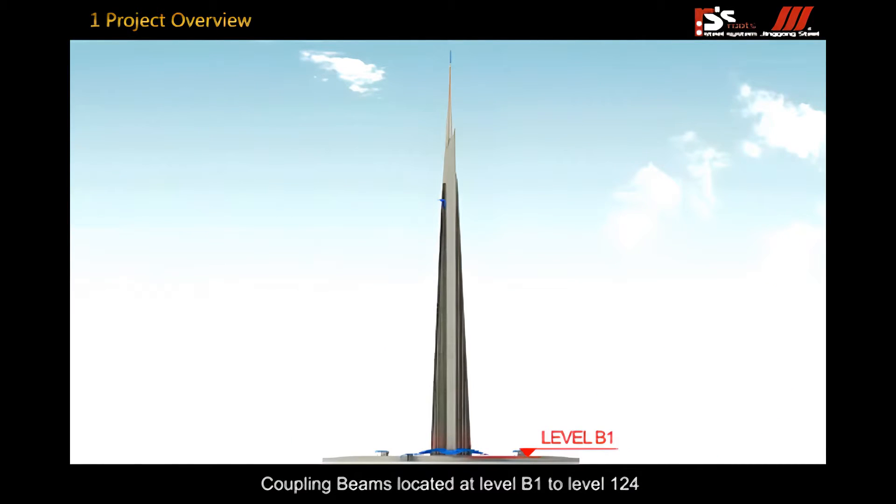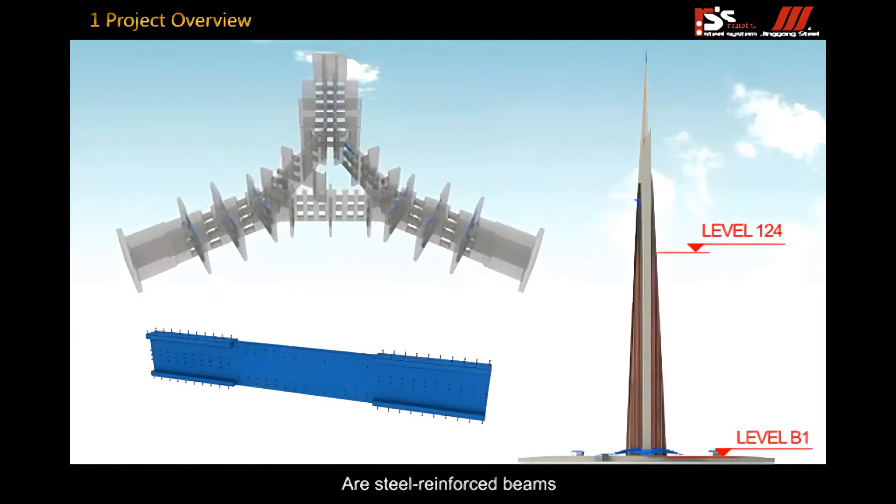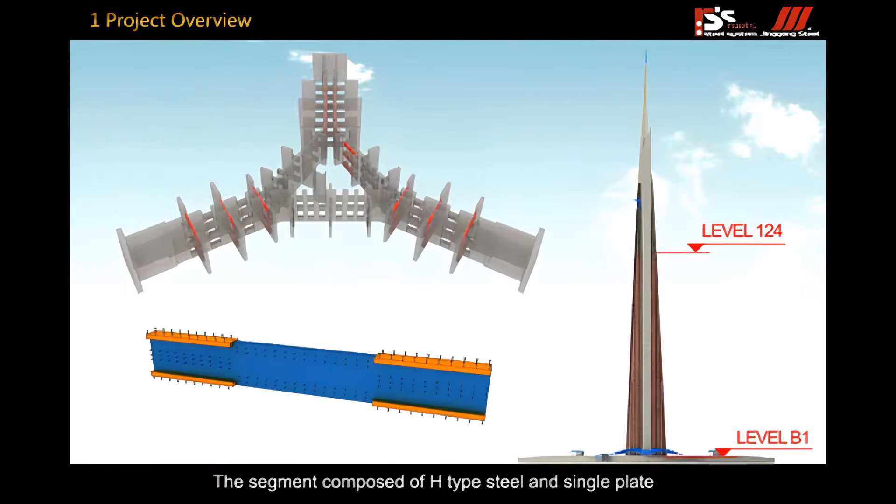Coupling beams located at level B1 to level 124 are steel reinforced concrete beams. The segment is composed of H-type steel and single plate, and studs are welded all round.